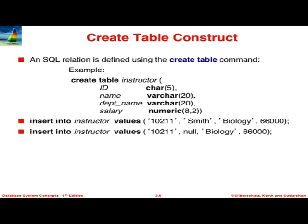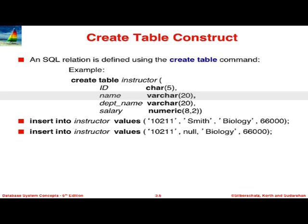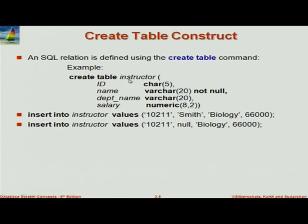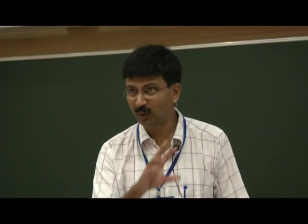Here is a standard schema example. We have an instructor relation. The ID has been made CHAR(5) — maybe it should have been VARCHAR. Name is VARCHAR and declared NOT NULL. Department name is VARCHAR. Salary is NUMERIC because this is a business context. For INSERT INTO instructor, string values are quoted but for numeric you should not quote it — sometimes people forget this and get into trouble.